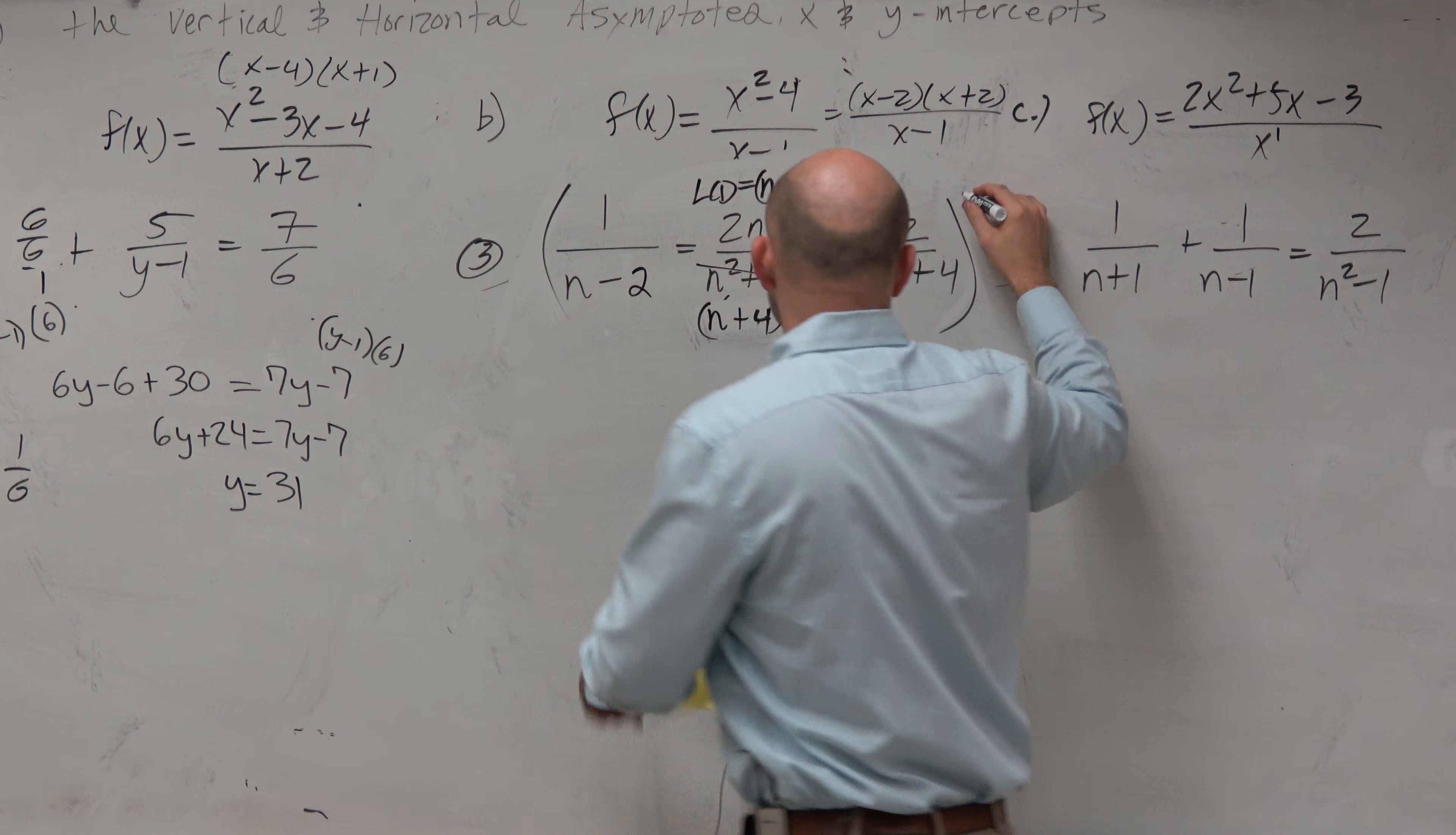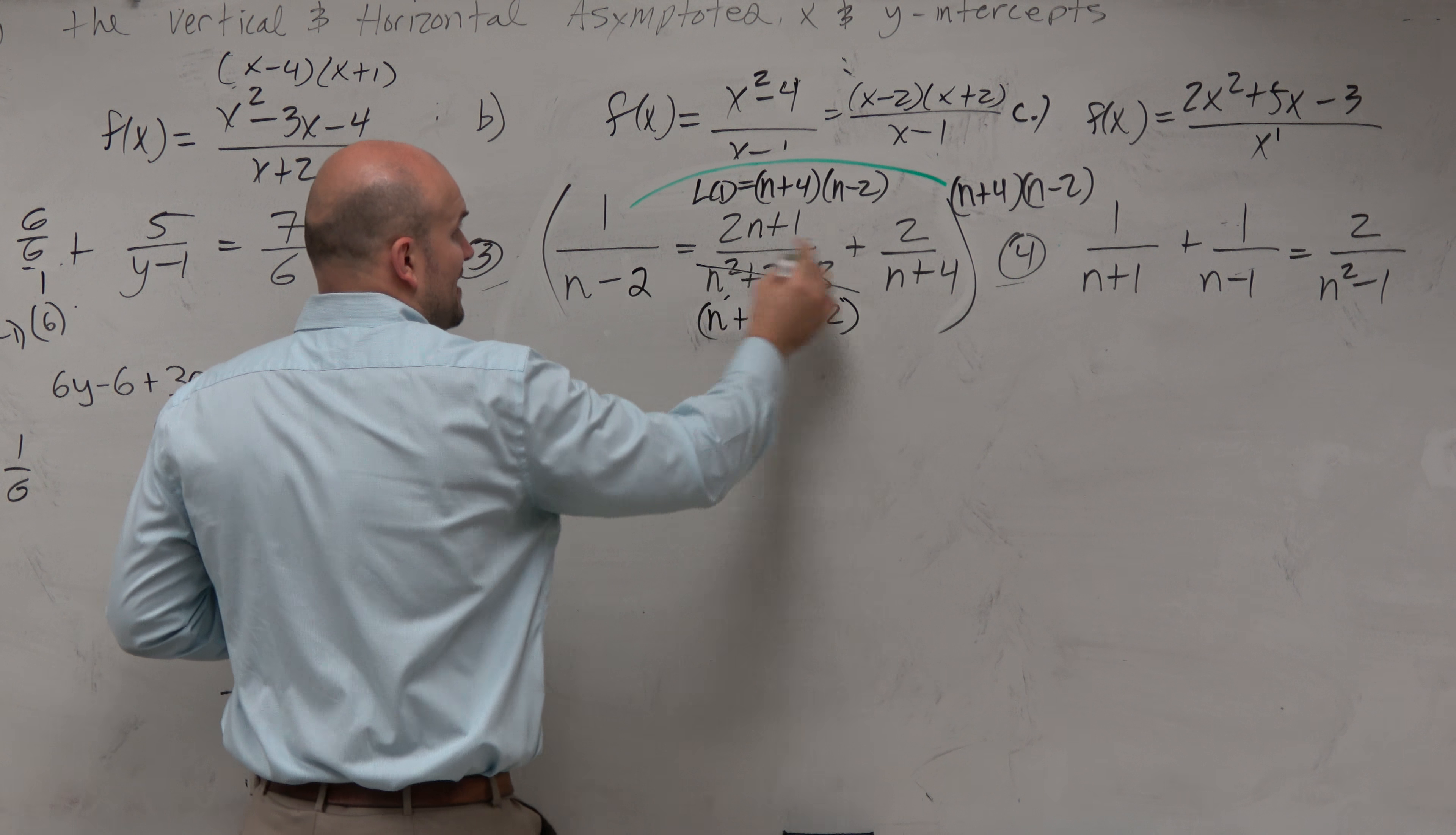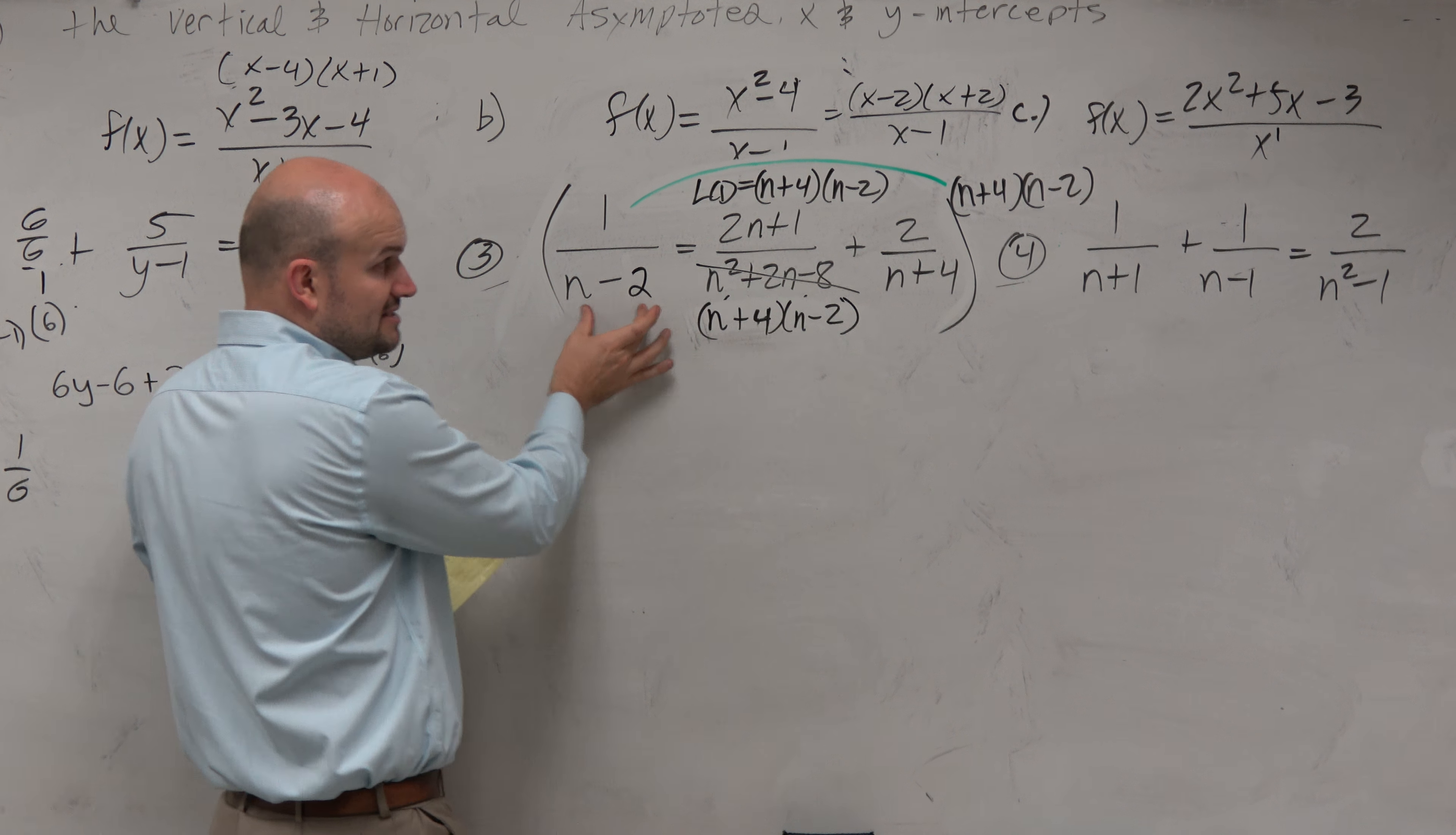So when we factor this, we get n plus 4 times n minus 2. And what we notice is that is our common denominator, our least common denominator, because n minus 2 divides that, this divides into itself, and n plus 4 divides into that. So then I'll write LCD equals n plus 4 times n minus 2.